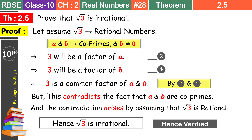एक चीज़ clear कर देता हूं: root में हमको 2 मिले, 3 मिले, 5 मिले, या कोई भी prime number मिले — हमें उससे कोई फर्क नहीं पड़ता। Method हमारा same रहेगा, बस under root में जो number है वो replace हो जाएगा। यह question exam में definitely आता है। तो अपने marks confirm करने के लिए इस method को कम से कम 2 या 3 बार repeat करके देखो।